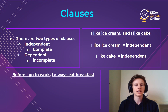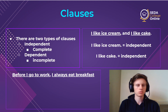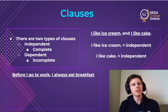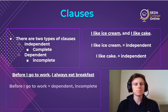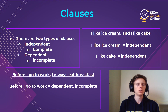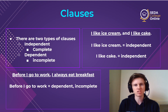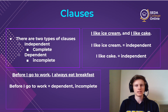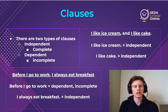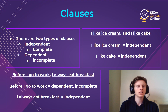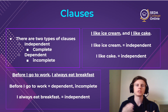On the other hand, I can take a different sentence: 'Before I go to work, I always eat breakfast.' That's one sentence, but now we have both types. We have a dependent, incomplete clause — 'Before I go to work' — well, that's not finished. Before I go to work, what? It's incomplete. And then we have the independent clause: 'I always eat breakfast,' which is a complete sentence. There we have the two different types: a dependent and an independent clause.